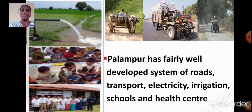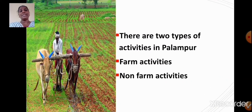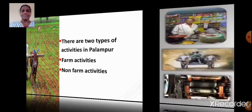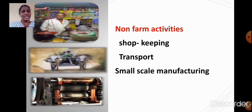Palampur has a fairly well developed system of roads, transport, electricity, irrigation, schools, and health centers. There are two types of activities in Palampur: farm activities and non-farm activities. Shopkeeping, transport, and small scale manufacturing are a few examples of non-farm activities.